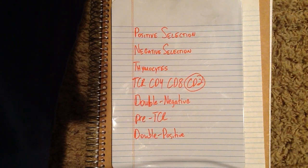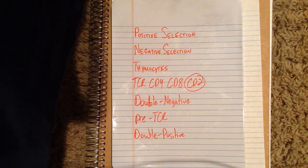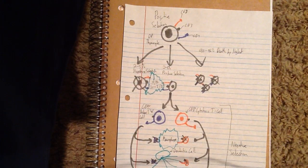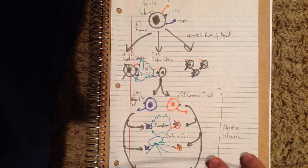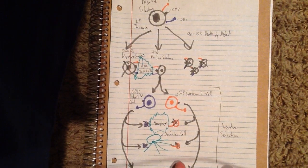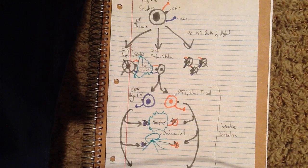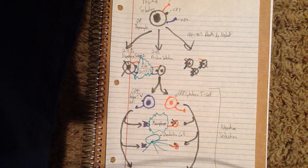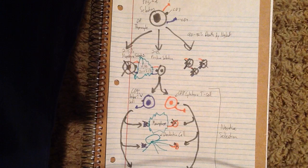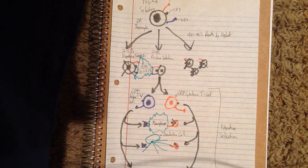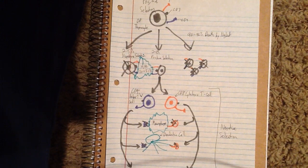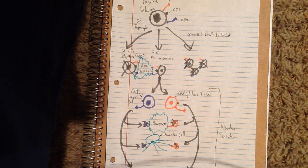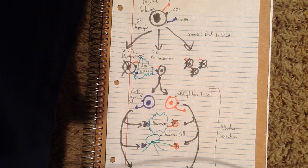Now these double positive cells are going to travel into the corticomedullary junction of the thymus, and there they're going to go through positive and negative selection. Positive selection is when the double positive T-cells bind to cortical epithelial cells expressing class 1 or 2 MHC plus self peptides with high enough affinity to get the survival signal, while negative selection happens when these double positive T-cells bind to bone marrow-derived macrophages that express class 1 or class 2 MHC plus self peptides with high enough affinity to get the apoptosis signal.